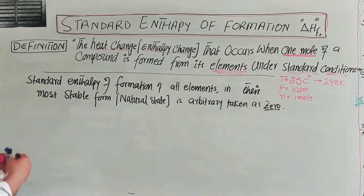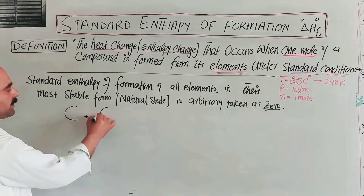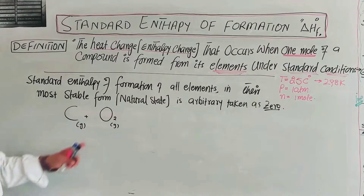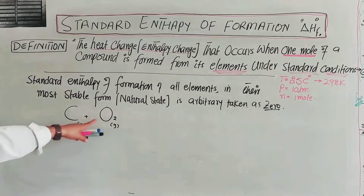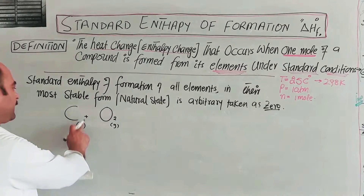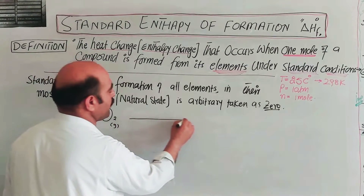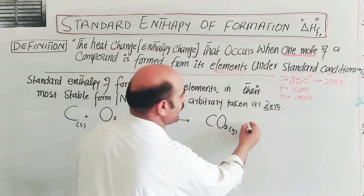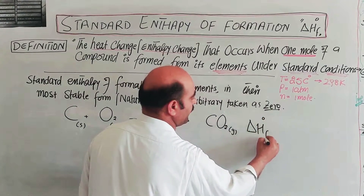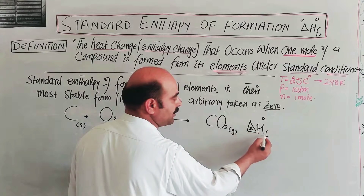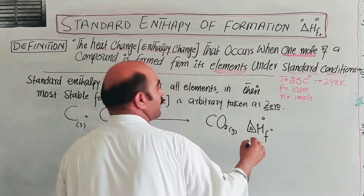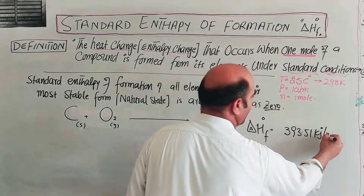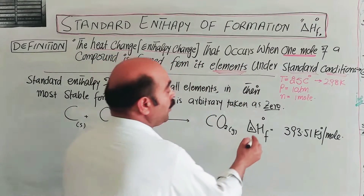Let us look at the first example. Carbon in its solid state reacts with oxygen gas under standard conditions to form one mole of carbon dioxide. The standard enthalpy of formation, delta H degree F, for carbon dioxide is minus 393.51 kilojoules per mole of carbon dioxide.